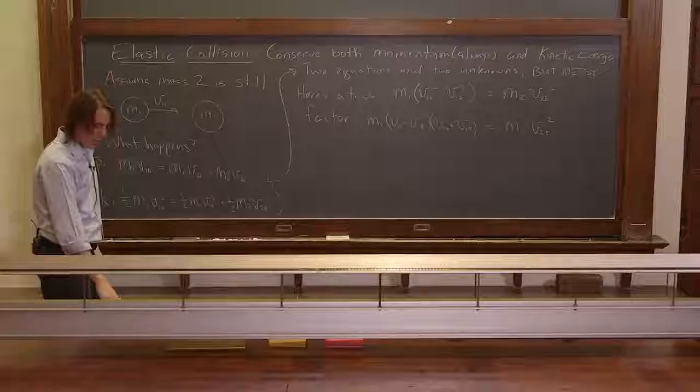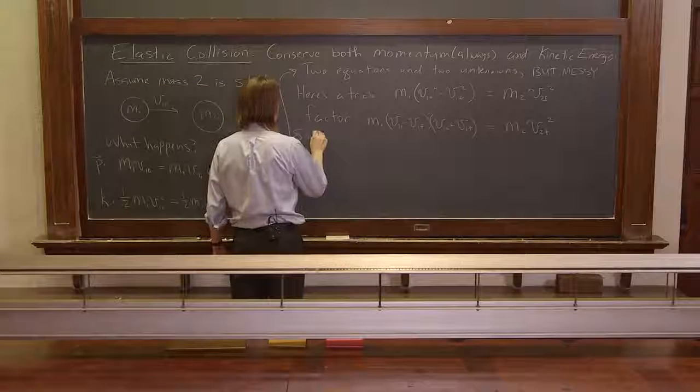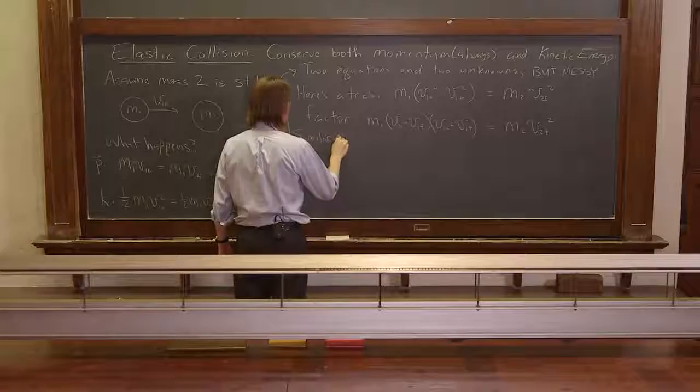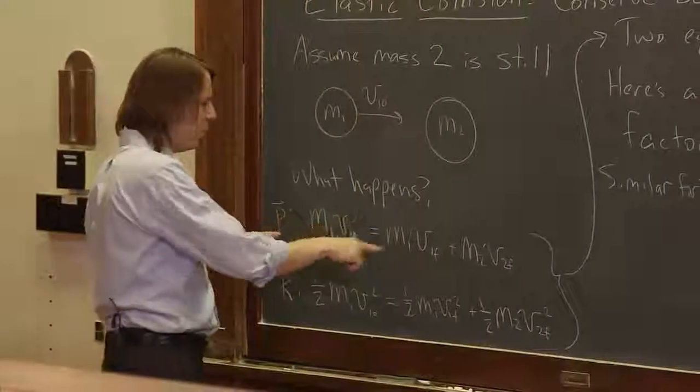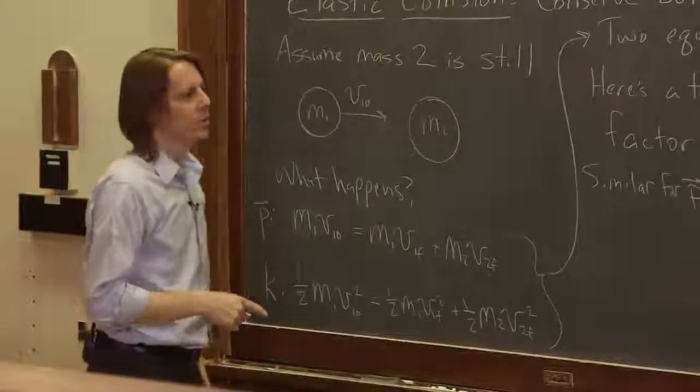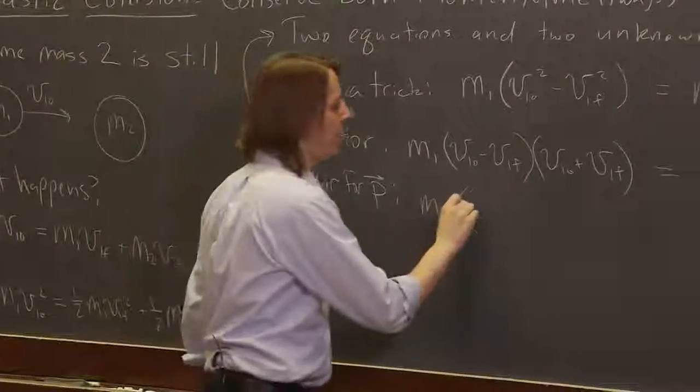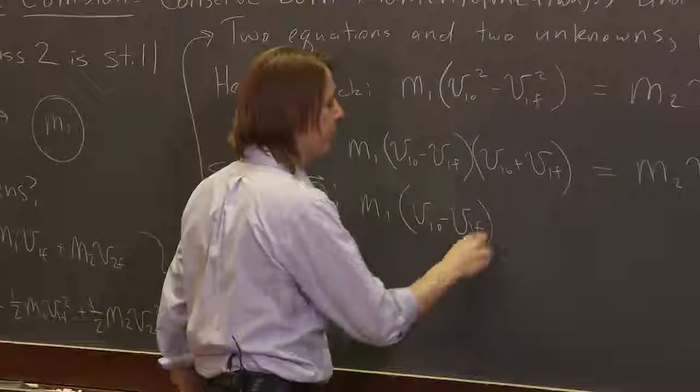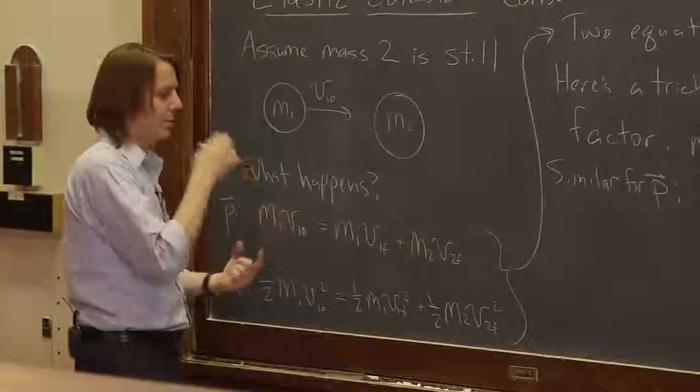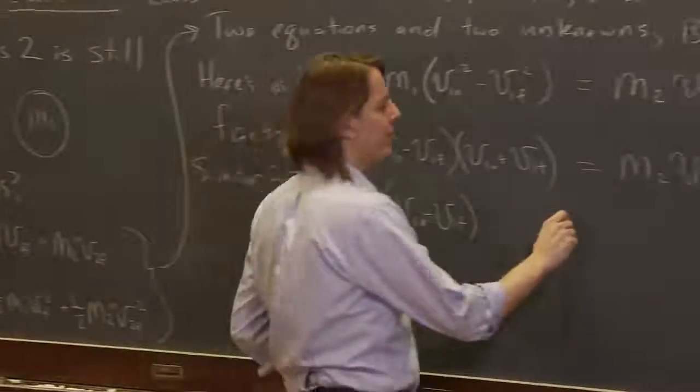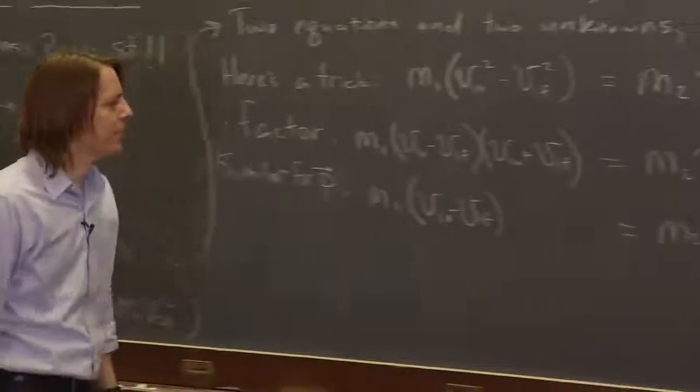Now let's do something similar for P, for momentum. For momentum, we also want to get all the M1 terms on the left. So we're going to say M1 times V1 naught minus V1F. All right. So that's simply this term minus that term when you bring it to the other side. And what does that equal? Let's write it over here. That equals M2 times V2F.